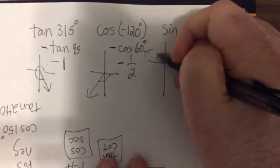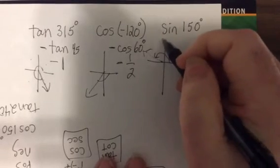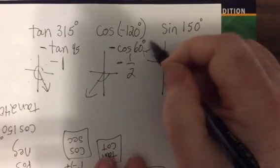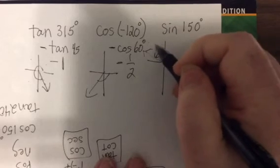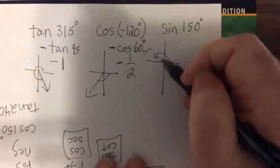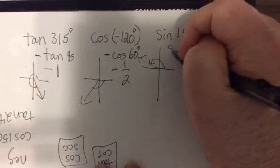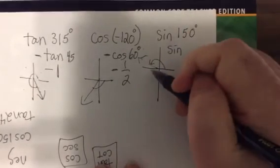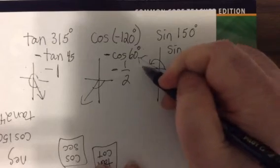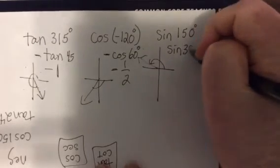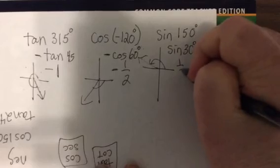Let's see, 150, right here, second quadrant. Y is positive. All students, sine, but Y is positive, R is always positive, so it's positive sine. And that's 30 degrees between the 150 and the 180, so one half.